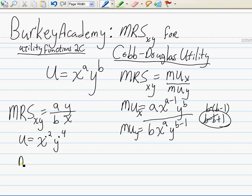The marginal rate of substitution of x for y equals 0.2 over 0.4, a over b, times y over x. And you can simplify this.